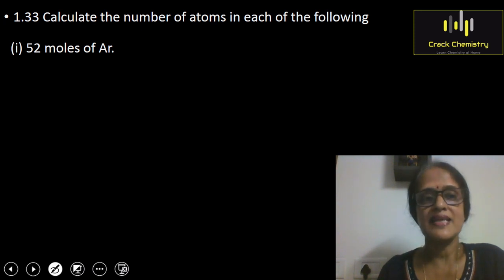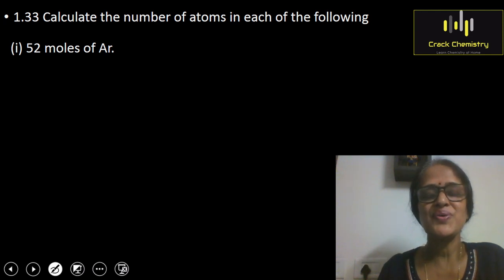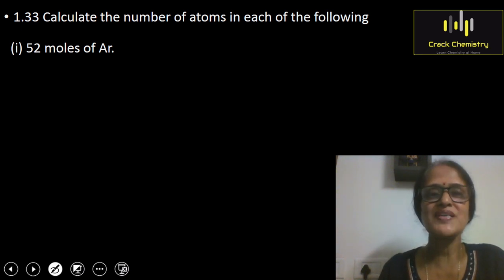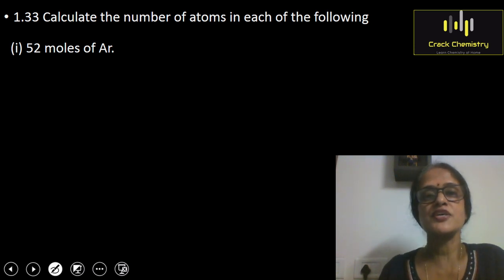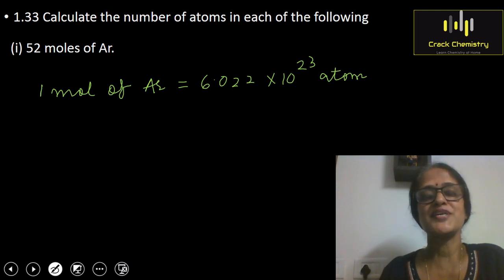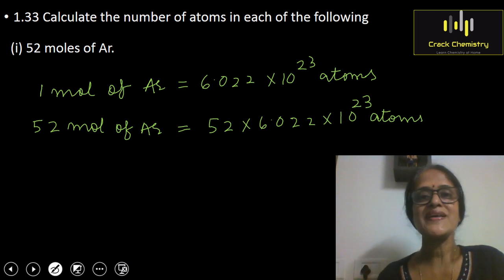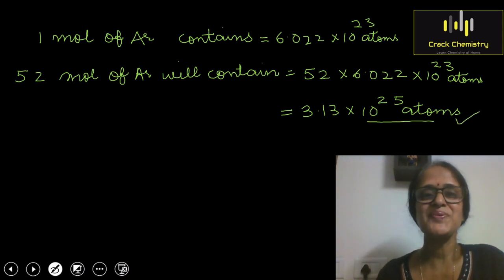The first NCERT problem asks: calculate the number of atoms in each of the following. This is problem number 33 of the NCERT exercise, Chapter 1. First part: calculate the number of atoms in 52 moles of argon. Since 1 mole of any atom contains 6.022 × 10²³ atoms (Avogadro's number), 52 moles of argon atoms will have 52 × 6.022 × 10²³ atoms, which equals 3.13 × 10²⁵ atoms.